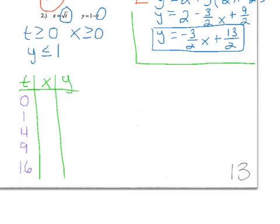If I plug a 0 in for the x equation, I'm going to get a 0. If I plug a 1 in, I'll get a 1. I plug in a 4, I will get a 2. 9, I will get 3. And 16, I will get 4.